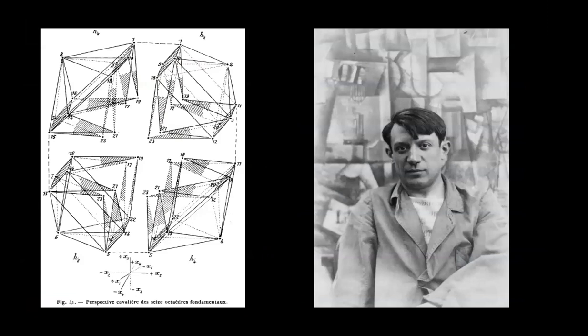The French mathematician Maurice Princet was known as the mathematician of Cubism because he mingled with the avant-garde artists of Paris like Pablo Picasso, and poet and art critic Guillaume Apollinaire, and other artists like Max Jacob and Marcel Duchamp. One afternoon, Princet visited Picasso and other Cubists at the Bateau Lavoir, which is where they lived. Princet introduced Picasso to Esprit Jouffret's Elementary Treatise on the Geometry of Four Dimensions, which came out in 1903. The diagram on the left is from that book.